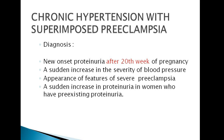For chronic hypertension with superimposed preeclampsia: this patient had chronic hypertension and then, after 20 weeks, there is an increased severity of the blood pressure plus the presence of proteinuria. We call this superimposed preeclampsia. We need to clarify more about chronic hypertension — it can be due to two types of causes: essential or secondary.